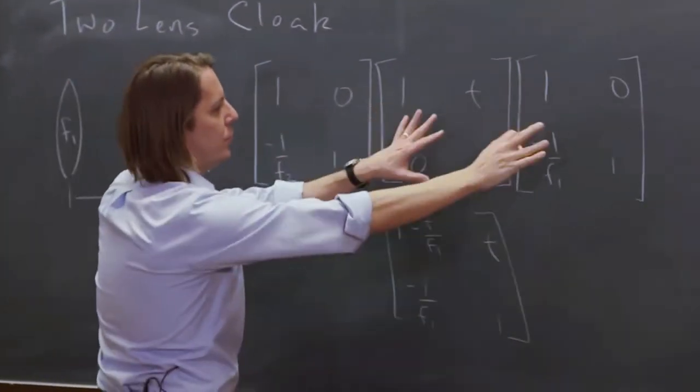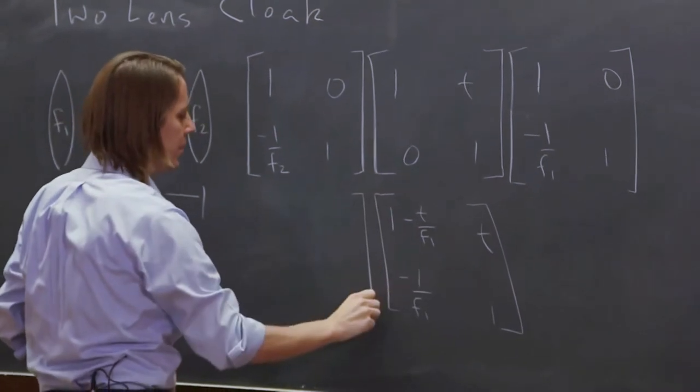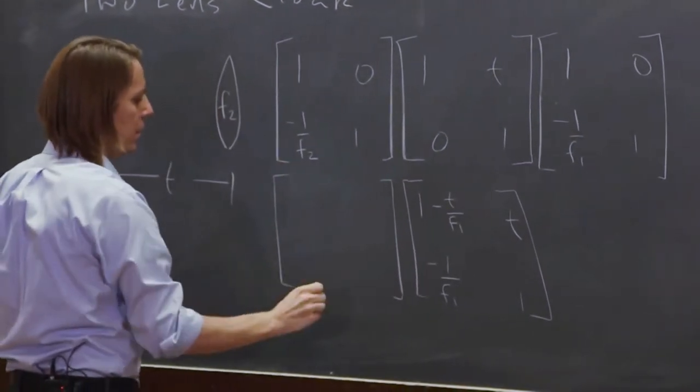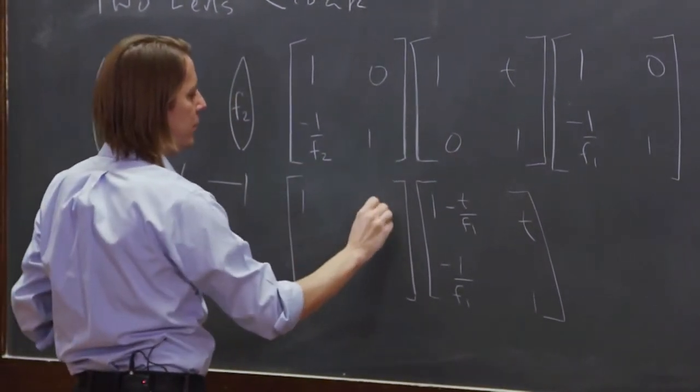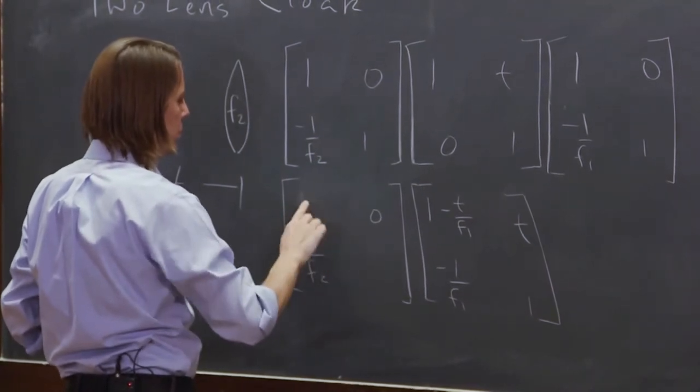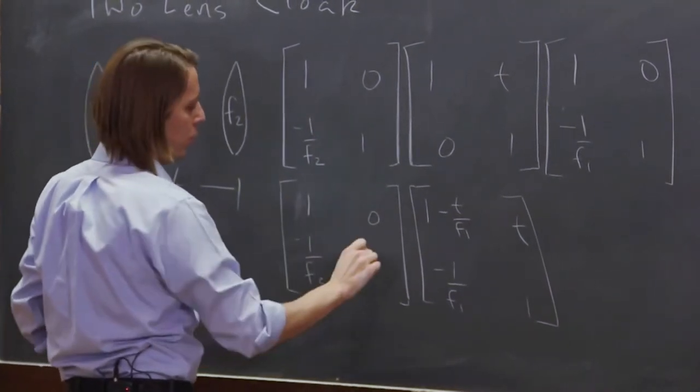Okay, that's the product of those two. And then we'll just pull this one down so that we can see them next to each other. 1, 0, minus 1 over F2, 1.